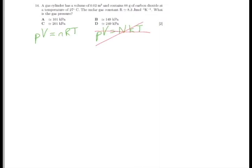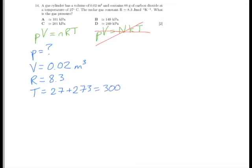So what do we know? Let's write down what we know. We know that P is what we're looking for. We know that V equals 0.02 metres cubed. We know R, which has been given to us in the question as being 8.3. And we know T is 27 degrees plus 273, because we must convert it from Celsius to Kelvin. So that's going to give us 300 Kelvin.